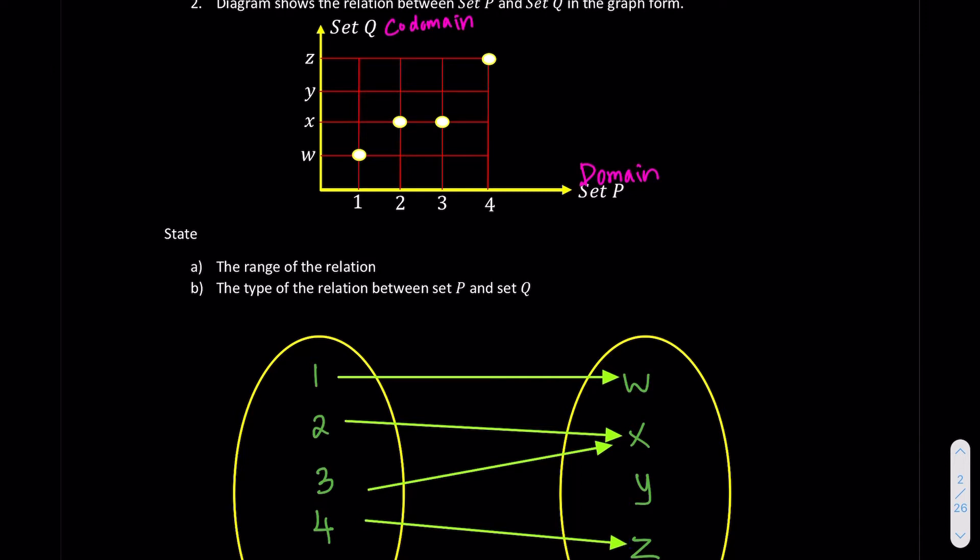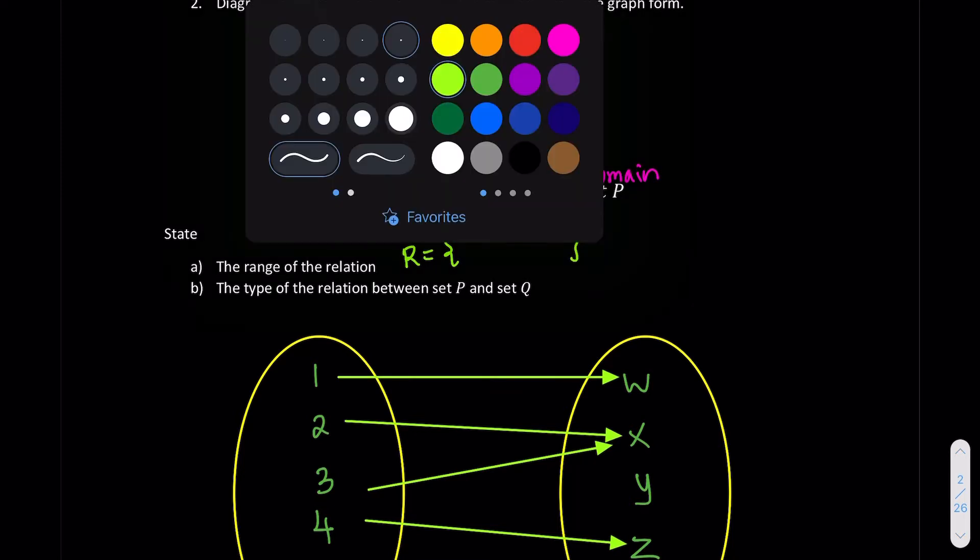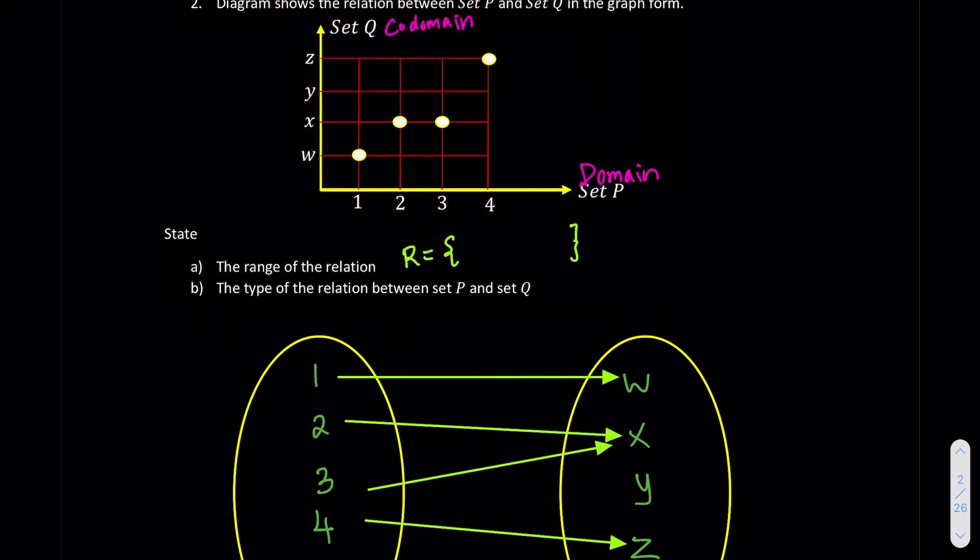But the first thing they're asking us is the range of the relations. So range, again, is a set. So we can say that the range is a set that consists whoever that is in the co-domain have partner. So we check first from the first one. w, do we have partner? Yes. Do x have partner? Yes. z, yes. So we now only left with y have no partner. So we say that the range is eventually consists of w, x, and z, but not y.